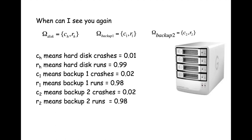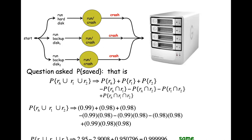When we last left off, we talked about systems comprised of a bunch of interacting parts, and we used the redundant disk array to motivate our conversation. We developed an expression for the probability that information is saved. The disk — primary hard drive, the first backup, and the second backup — all operate independently, and the output of one disk does not impact the input of another disk.